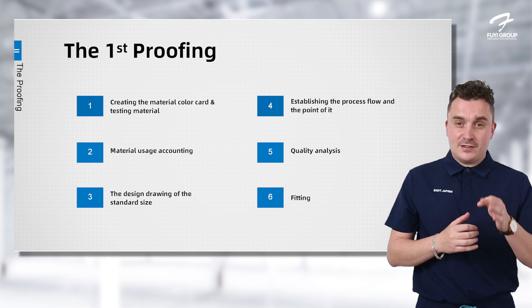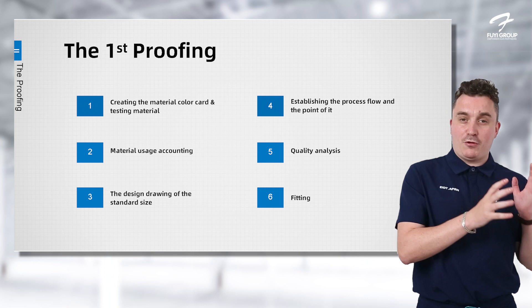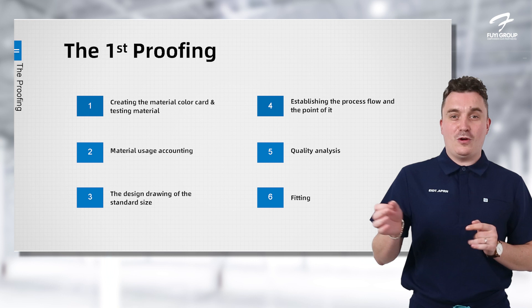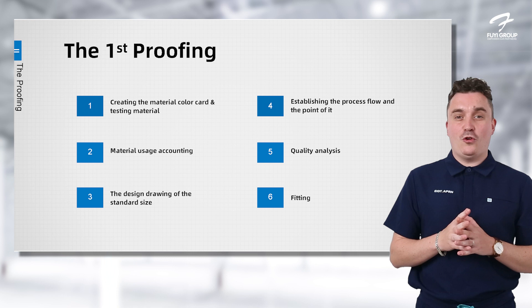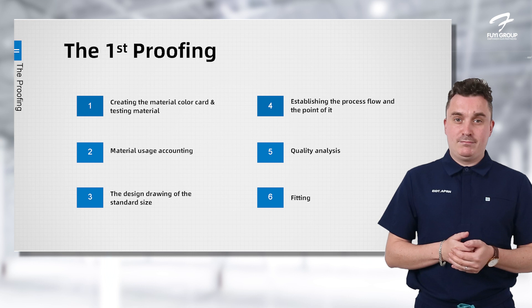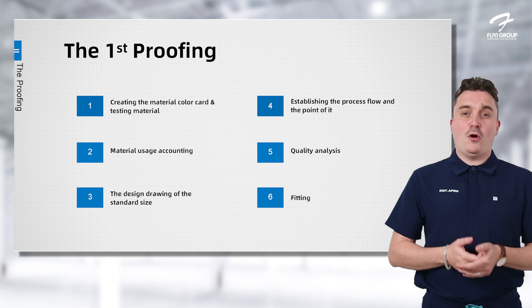The third step is our design drawing — probably the one you'll like the most — getting your product onto the design board and seeing how it will look on your customers. The fourth step is a timeline, from when we start production to when you can have the products in hand, so you can be exactly sure of delivery. The fifth step is quality analysis, where we talk about the different quality levels we can produce. The sixth and last step is the fitting, which we usually do on models, though we can also send samples to you to do the fitting yourself.